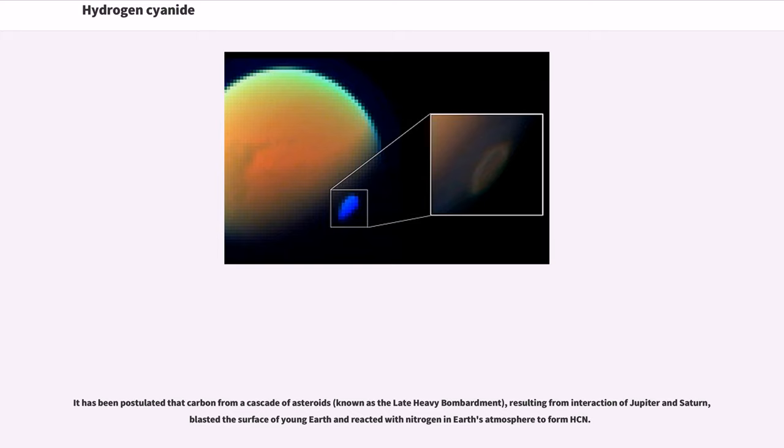It has been postulated that carbon from a cascade of asteroids resulting from interaction of Jupiter and Saturn blasted the surface of young Earth and reacted with nitrogen in Earth's atmosphere to form HCN.